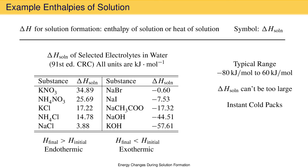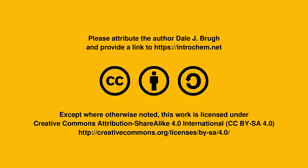Instant cold packs are based on the endothermic heat of solution for compounds such as ammonium nitrate and urea. Instant hot packs are based on the exothermic heat of solution of compounds such as magnesium sulfate. These products are essentially a bag of water with an inner bag containing the solute. Squeezing the pack breaks the inner bag, leading to solution formation — either a gain in system enthalpy for a cold pack, or a release of enthalpy from the system for a hot pack.